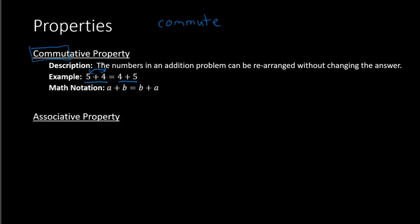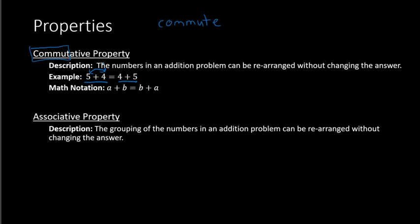The next property is the associative property. The associative property says that the grouping of the numbers in an addition problem can be rearranged. So what this would look like is if we had 3 numbers added together — let's say we had 3 plus 4 plus 5. The associative property says that it doesn't matter if we put parentheses around the 3 and the 4 and add these numbers first, or if we put the parentheses around the 4 and the 5 and add those numbers first.